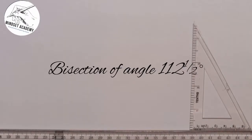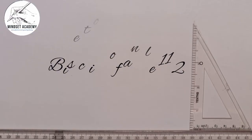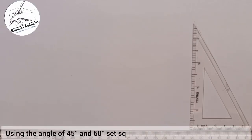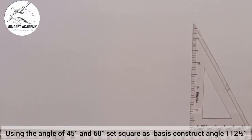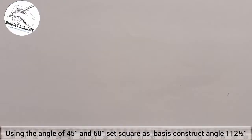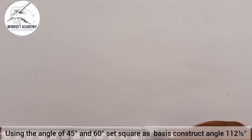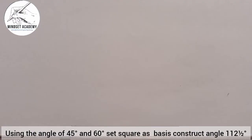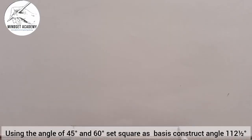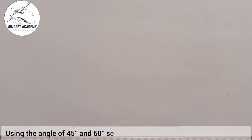Welcome to my channel. In this tutorial, we are told to use the angles of 45 degree and 60 degree set square as a basis to construct angle 112 and a half degrees by bisection. So we are constructing angle 112.5°. The first thing you do is draw an inclined line, marking point A and point B. Angle 112.5° falls between 90 and 180 degrees.